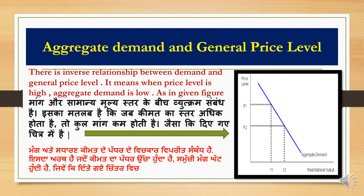Between aggregate demand and general price level, when price level is high, aggregate demand is low, and vice versa. That is a simple relation, but we should keep in mind that it is an inverse relation — both move in different directions. When price increases, demand decreases, and similarly vice versa.